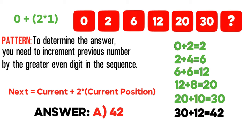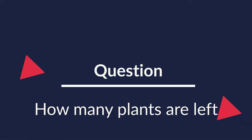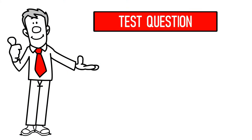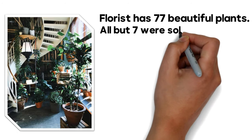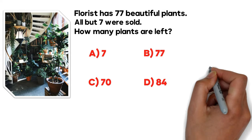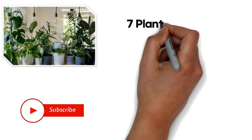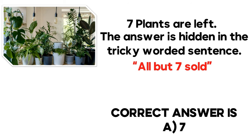Hopefully you've nailed that question. Here is a simple but tricky question which tests your math skills as well as attention to detail. A florist has 77 beautiful plants; all but seven were sold. How many plants are left? The answer is very simple: 7 plants are left. The answer is hidden in the tricky wording — 'all but seven sold' — so the correct answer is choice A, seven.